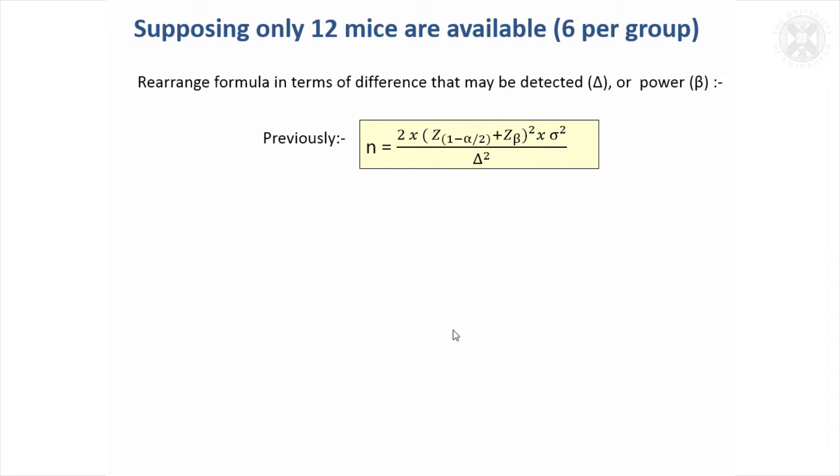But sometimes people say, well I've only got this number of mice available, practicalities mean I can only do this. Then the situation's different. It's a good idea to calculate what the study is likely to achieve with that number of animals and think about whether it's a valid study. To do that, it's possible to turn this formulae around so that it can be rearranged in terms of the difference that you might be able to achieve, or in terms of how much power you've got to obtain a particular difference.